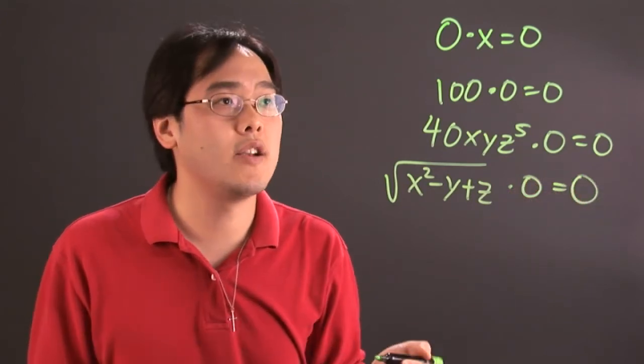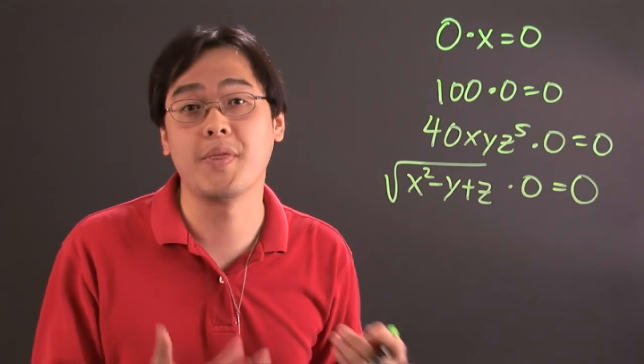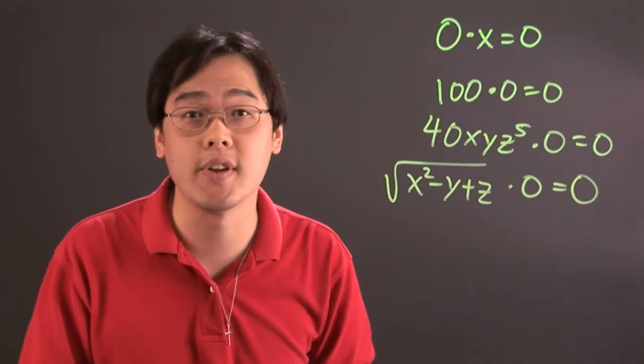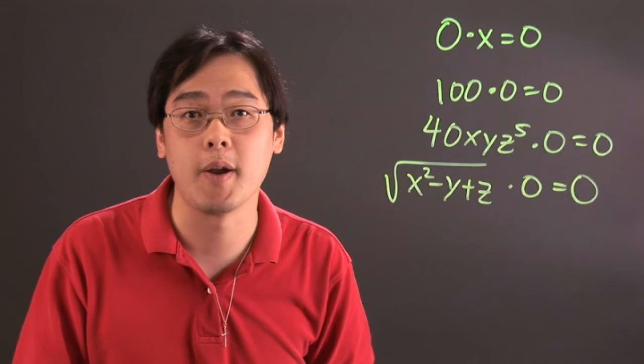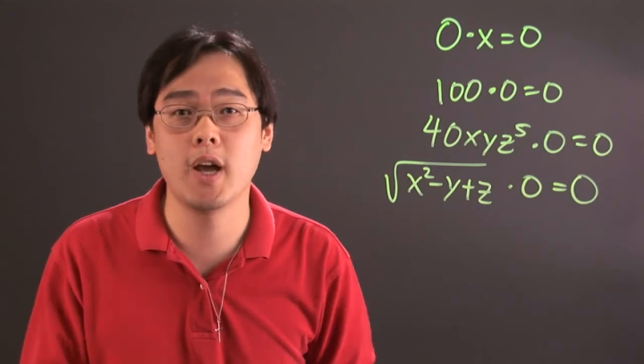So the idea here is that once you know you're multiplying by zero, you will get zero no matter what the term happens to be. That's really a nice convenient tool because it helps simplify your problems if you happen to have zeros. I'm Jimmy Chang and that's how to multiply with zeros.